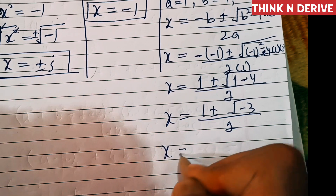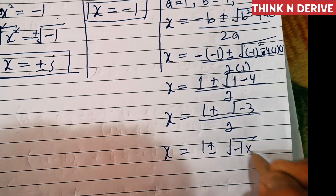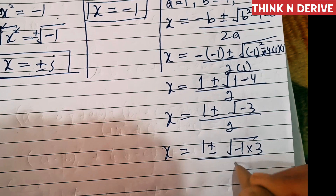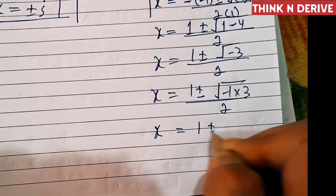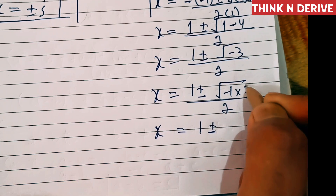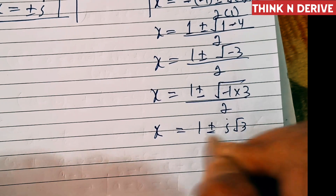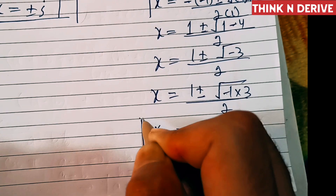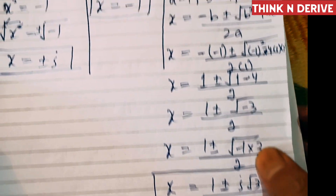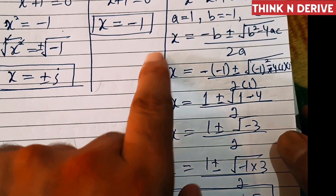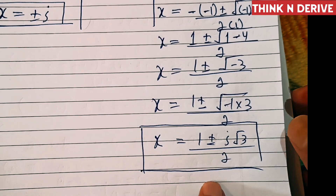Since √(-3) = √(-1) · √3 = i√3, we get x = (1 ± i√3) / 2. These are the final two solutions. So all five solutions are: ±i, -1, and (1 ± i√3) / 2.